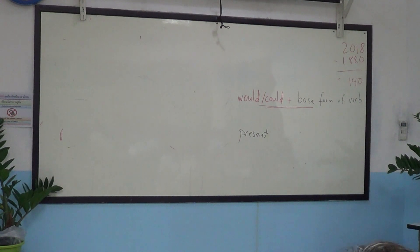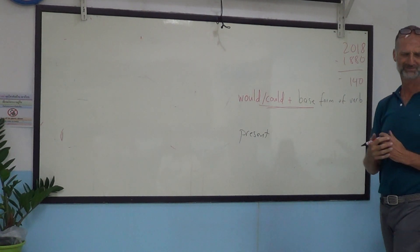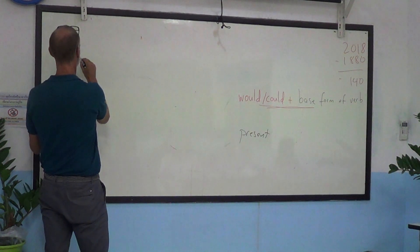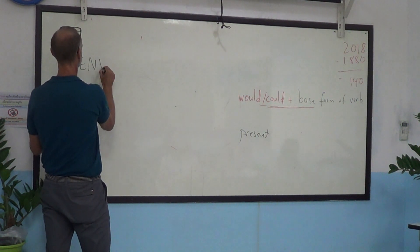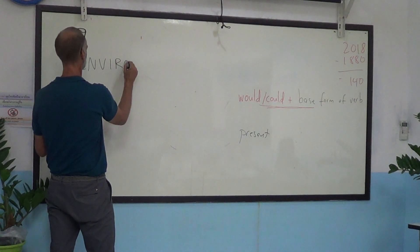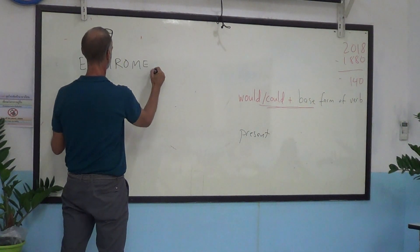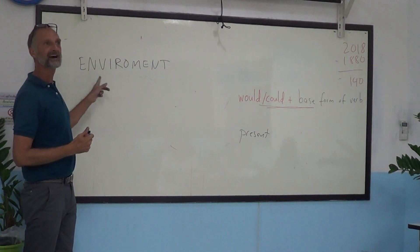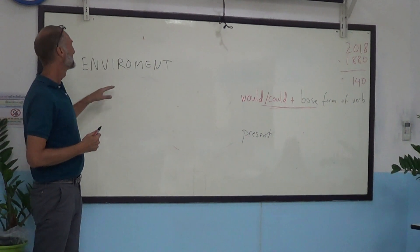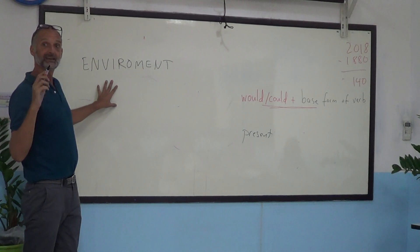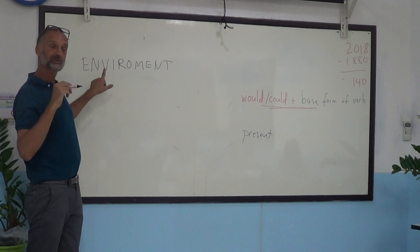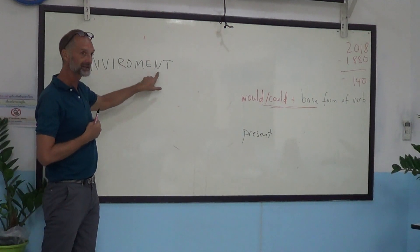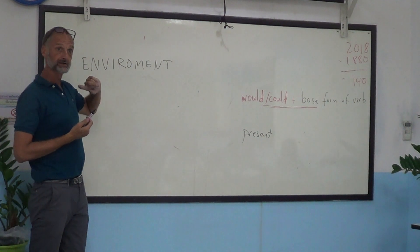Alright, what is it? Environment. You will use these letters: the E, the N, the V, the I, the R, the O, the N, the E, the other N, and the T, to make words.